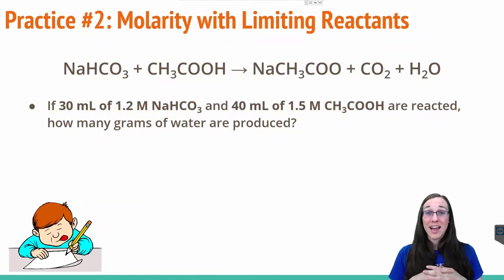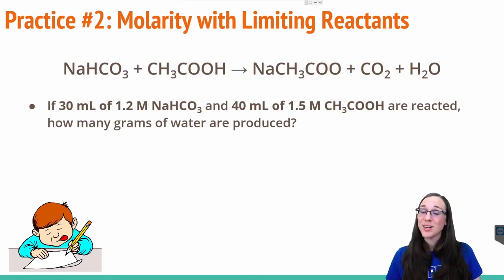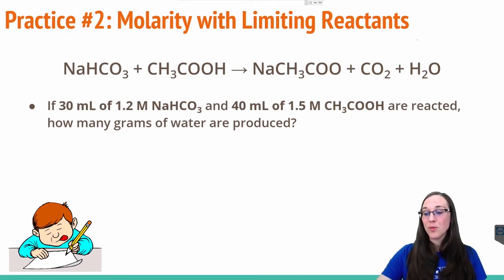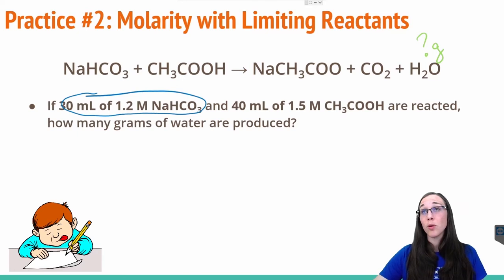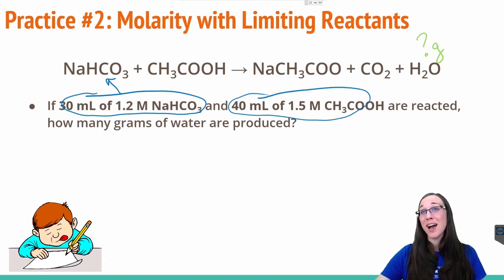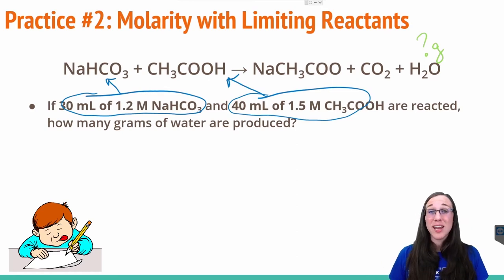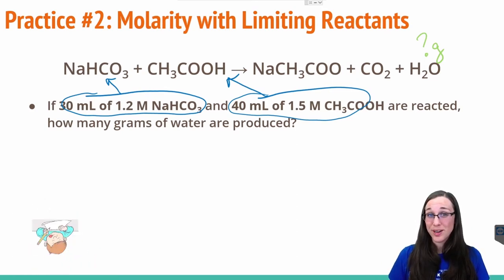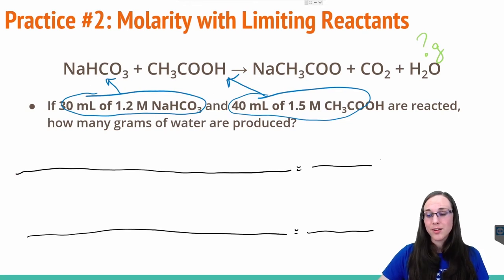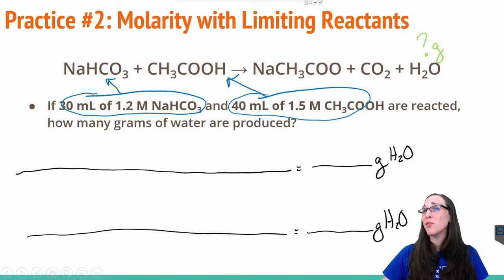Let's try molarity with limiting reactants next. Given the following equation between baking soda and acetic acid — i.e. vinegar — we're going to solve how many grams of water are produced. We have 30 milliliters of a 1.2 molar solution of baking soda, and 40 milliliters of a 1.5 molar solution of vinegar as our two reactants. Just as with any limiting reactant problem, we're always going to need two lines to freedom. Our goal is grams of water. We're going to start with the volume amount instead of the molarity amount, since that has a single unit associated with it.